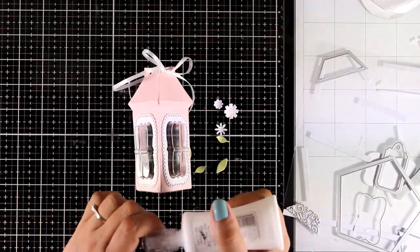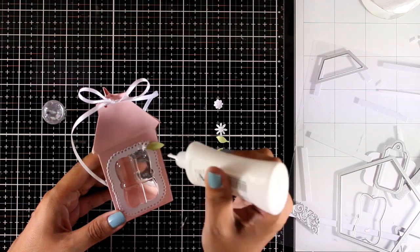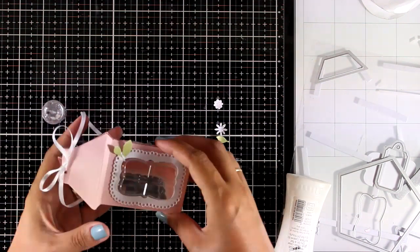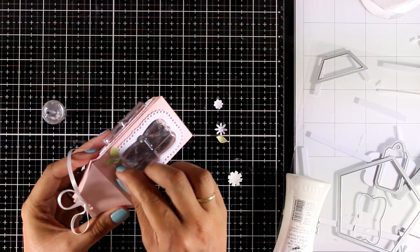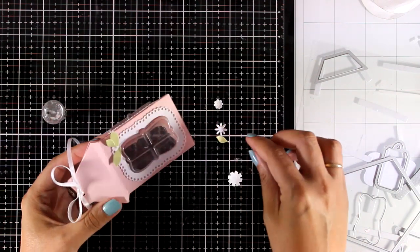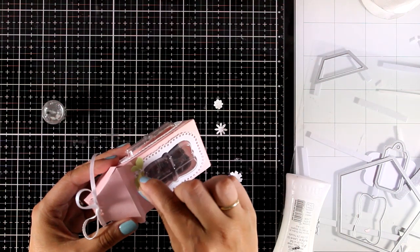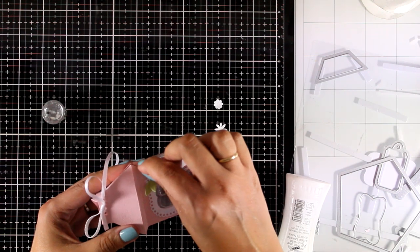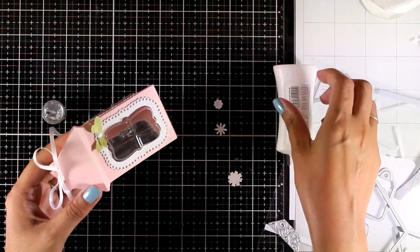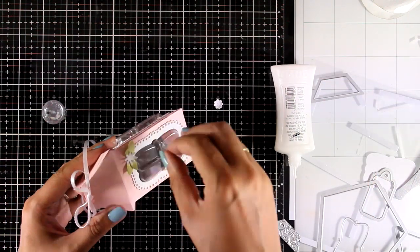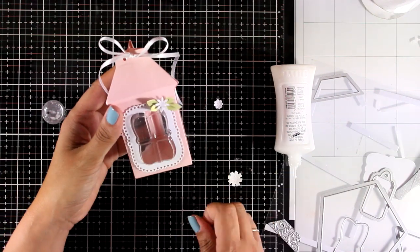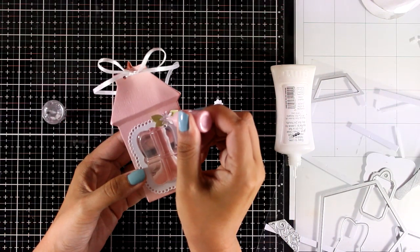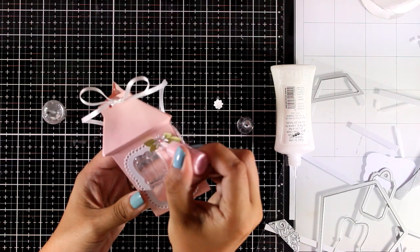Now I'm going to use my white Nouveau Deluxe on top of one of the windows and I'm going to put together a little flower arrangement, which I think adds a cute element on my little favor box. At the center of these leaves, I'm going to stick one of the flowers. And as an extra embellishment, I'm going to use the Crystal Drops at the center to add a touch of pink.